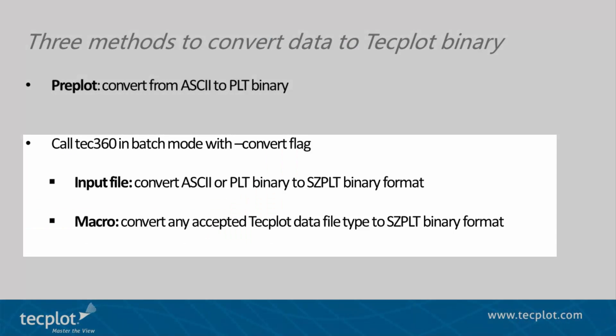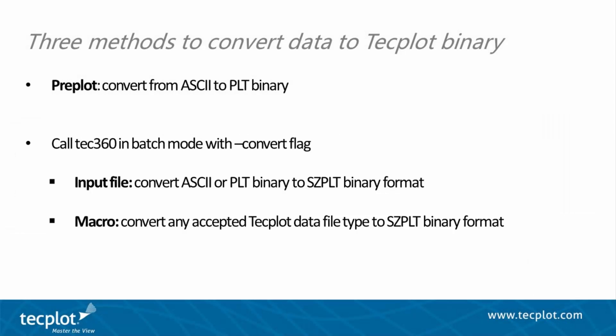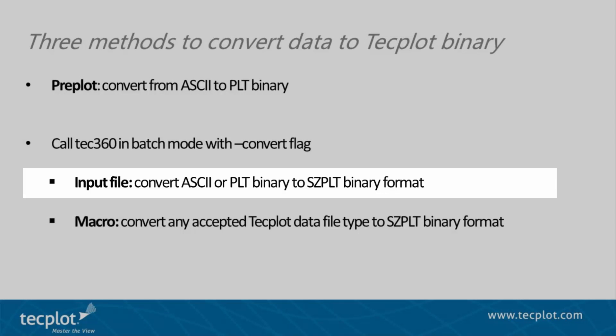The second and third methods use the Convert flag passed to the Tech360 executable, and output TechPlot SCPLT files. This is a new feature as of the 2017 R1 release, and does not consume a license when run. The first of these two methods allows conversion of any native TechPlot ASCII or PLT binary files to CISL format.